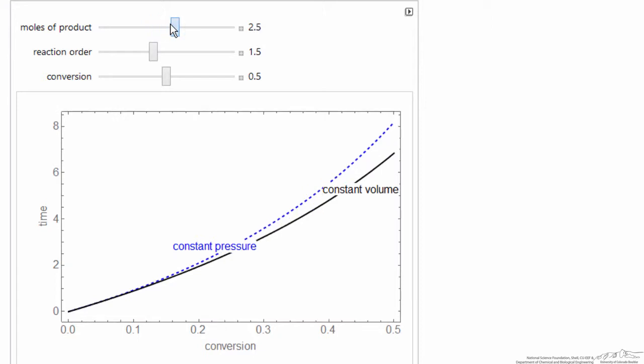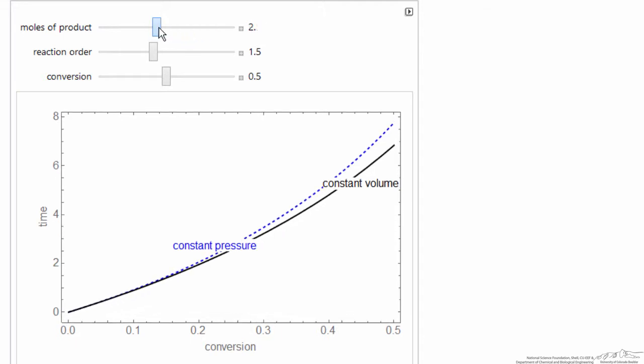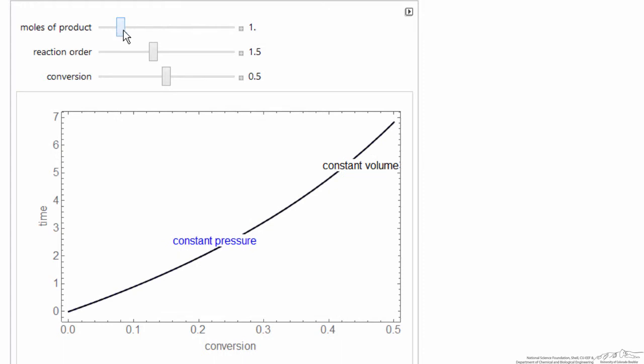If I were to increase this number, then the time difference becomes larger. If I were to make it one, then there's no difference because we're not increasing the number of moles of reaction, then we're not expanding the system and diluting our reactor.